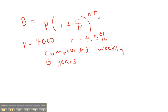Basically, you just plug it in. Here, we're going to look at this as a $4,000 investment at 4.5% interest compounded weekly for 5 years. What this will give me back is a value after 5 years, including your principal. So let's plug it in the formula and see what we get.